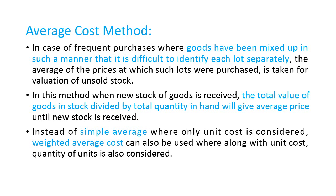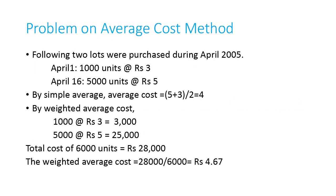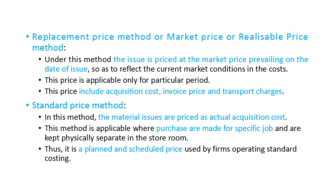In the average cost method, if goods have been mixed such that it is difficult to identify each lot separately, we use this method. The weighted average cost is preferred over simple average: for example, 1,000 units at ₹3 = ₹3,000 and 5,000 units at ₹5 = ₹25,000, totaling ₹28,000 for 6,000 units, giving a weighted average cost of ₹28,000 ÷ 6,000 = ₹4.67. In the market price or replacement price method, issues are priced at the market price on the date of issue, including acquisition cost, invoice price, and transport charges. In the standard price method, a planned price is used and the actual acquisition cost is considered.